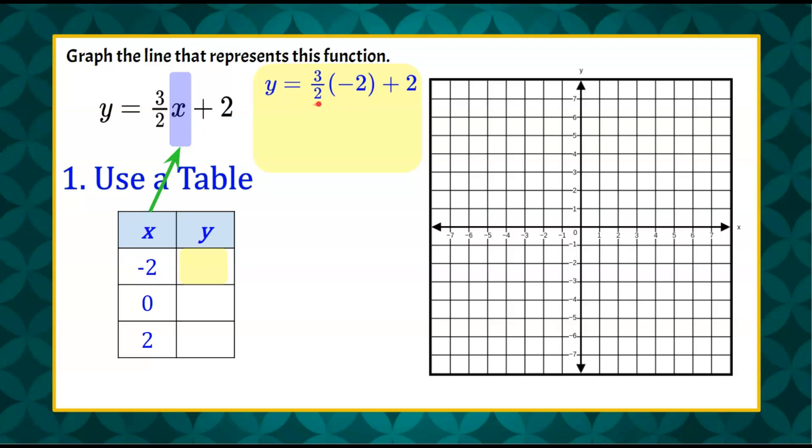All right, let's solve for y. So we see that we have 3 halves times negative 2. So negative 2 divided by 2 is negative 1. Negative 1 times 3 is negative 3, and we've got to add our 2. Negative 3 add 2 is negative 1. So I know that when x is negative 2, y is negative 1.